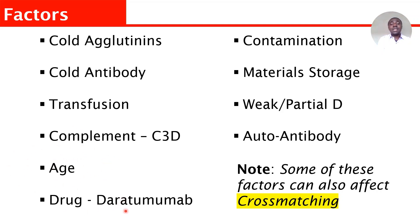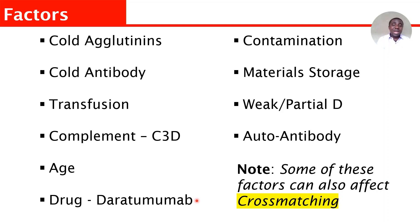Another factor is the drug daratumumab. This drug can affect blood group and antibody screening. Once somebody is on this medication, it can cause reactions throughout. It will require a special technique to get the blood group and antibody screening. Scientifically, this drug binds with CD38, which is lowly expressed on red blood cells, and it can mask antibodies — that's why you can find it difficult to detect the blood group or antibody screening. This is why a patient can get pan-agglutination or pan-reactive results across all wells.